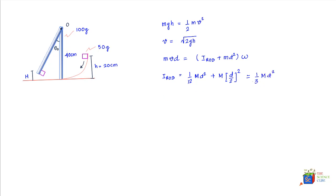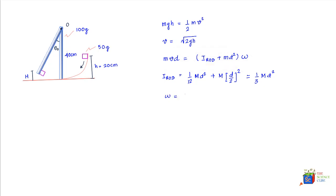Substituting (1/3)Md² for I_rod and v = √(2gh) into the angular momentum equation, we find that omega equals m·d·√(2gh) divided by (Md²/3 + md²).